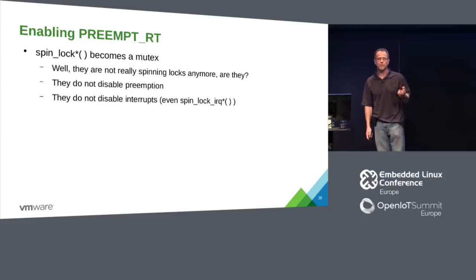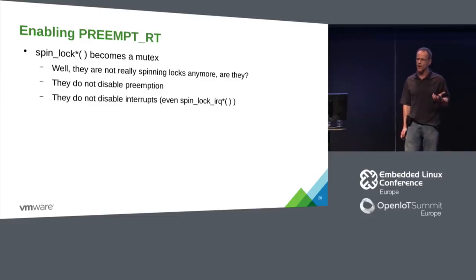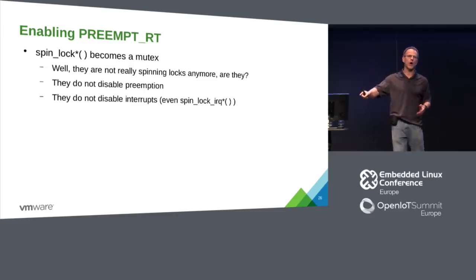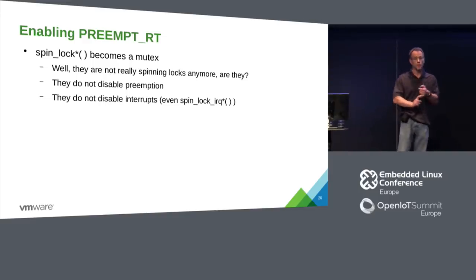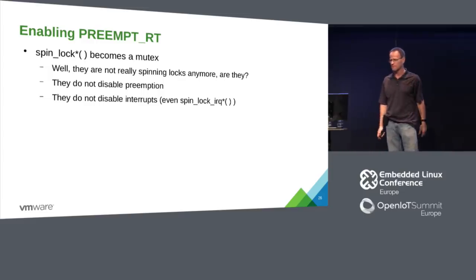Enabling PREEMPT_RT — this is the big hammer getting into the kernel. This is what we mean when we say real-time is coming to Linux. It's the option we've been dreaming of: turning spin locks into mutexes. They're not really spin locks anymore — they don't disable preemption, and they don't disable interrupts even if you call spin_lock_irq or spin_lock_irqsave.